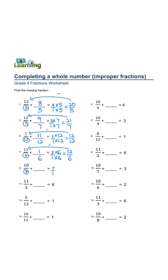denominator is 3. 7 times 3, 1 times 3 equals 21 over 3. 21 minus 10 is 11 over 3. 6 over 1,